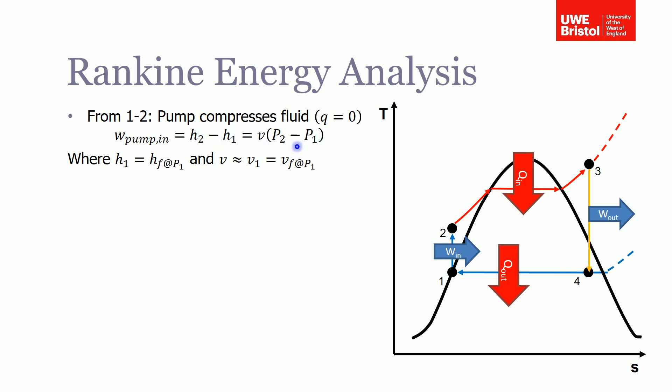What that's equal to is v delta p. Because this is liquid here, the enthalpy at state one is equal to the enthalpy of the fluid for that pressure, so hf at pressure one. And because it's a fluid, its volume isn't going to change much during that compression process, so we can assume that the volume is equal to the volume of the fluid on that fluid line at p1. If we know the pressures, we can then work out the amount of work that's done by the pump.